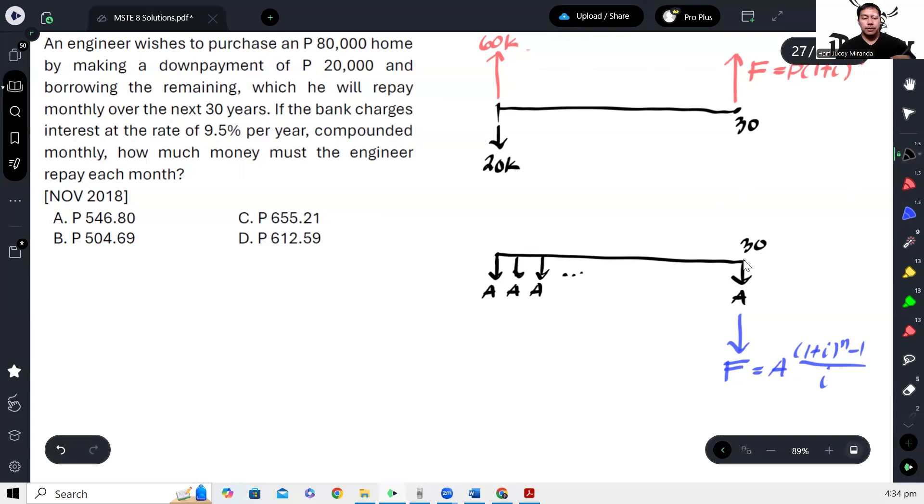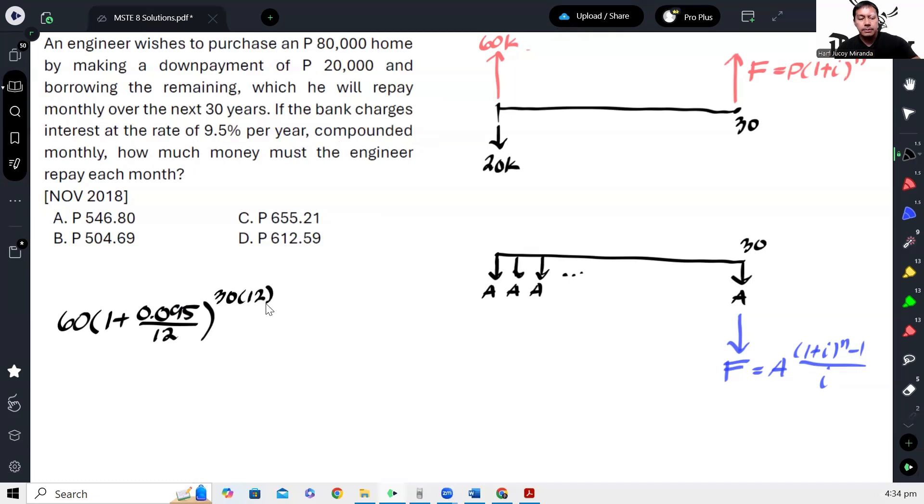Alright, so equate lang natin yung dalawa. So we have 60K, 60 ko na lang ha, 1 plus, so ano yung interest rate? So ang interest rate ay 9.5% per year compounded monthly. So, 0.095 divided by 12 raised to, ilang years? 30 years. So 30 years times, kasi monthly, so times 12. So eto yan.